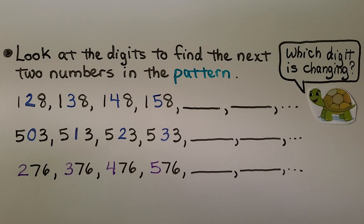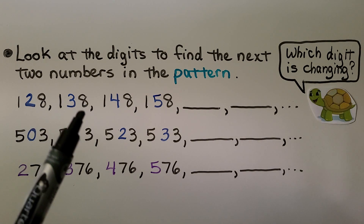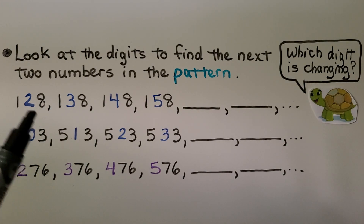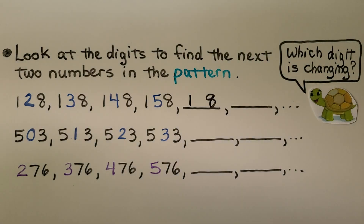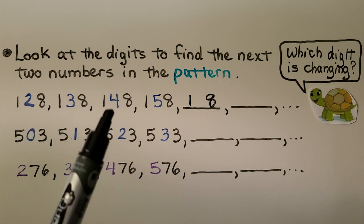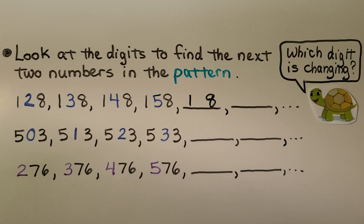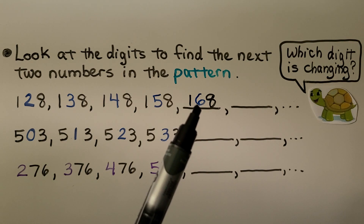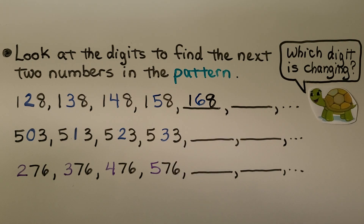Here we need to look at the digits to find the next two numbers in the pattern. We look for which digit is changing. We have 128, 138, 148, 158. The 100s and 1s are staying the same and the 10s are going up by 1. The 10s are going 2, 3, 4, 5 — the next must be 6, so 168. Then the 10s go up to 7, giving us 178.